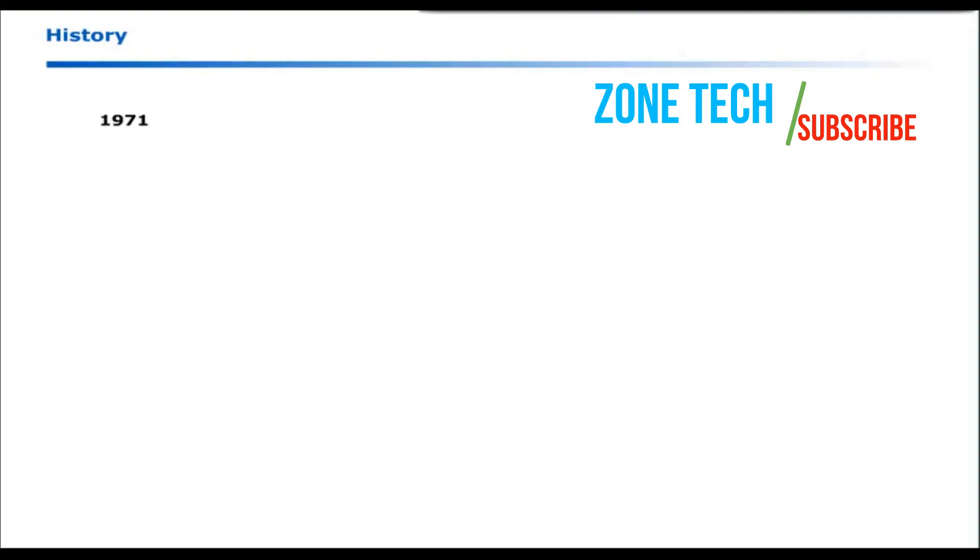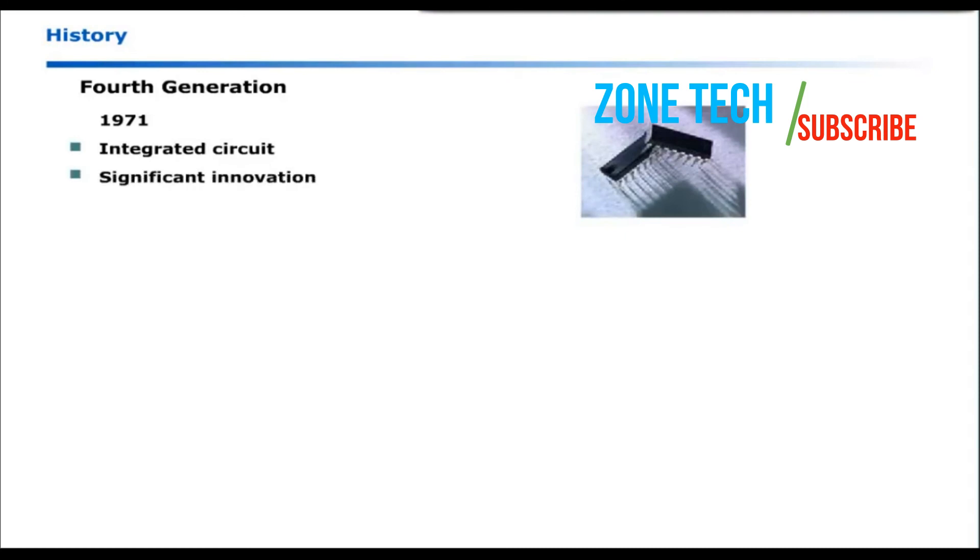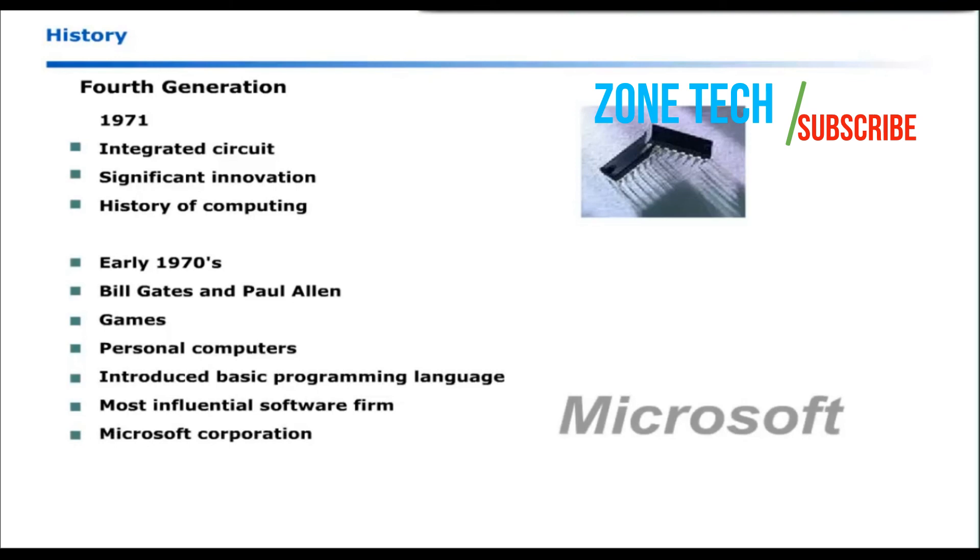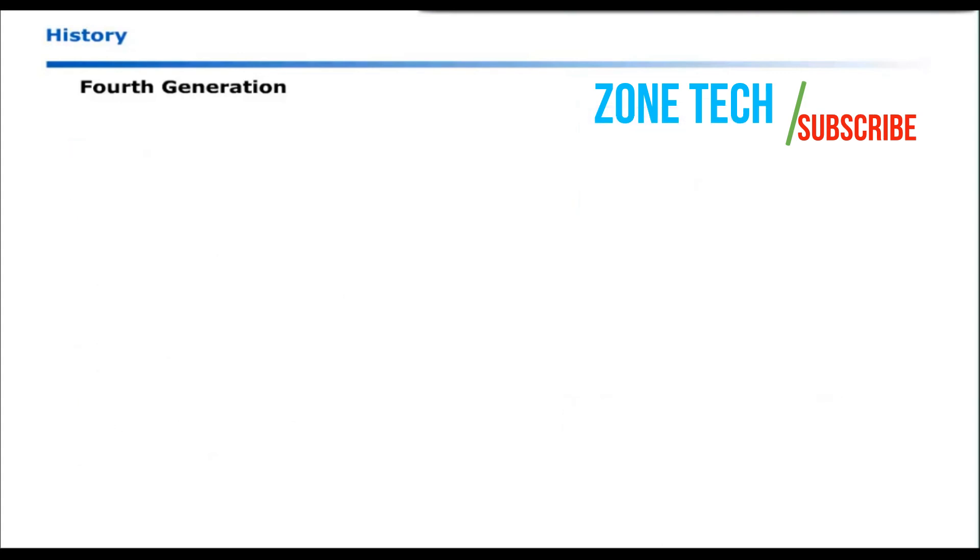During 1971, 4th generation computers were introduced with the introduction of integrated circuit. This was significant innovation in the history of computing. During early 70s, Bill Gates and Paul Allen were busy in developing games for personal computers and introduced BASIC programming language. They formed today's most influential software firm, Microsoft Corporation. It revolutionized the idea of personal computing with the introduction of Microsoft Disk Operating System.